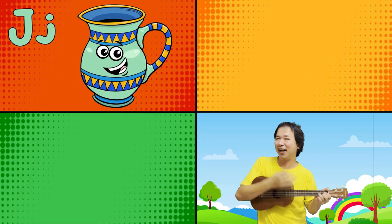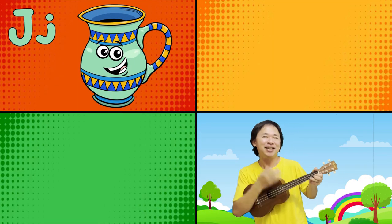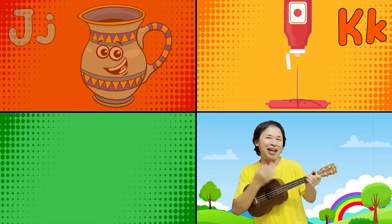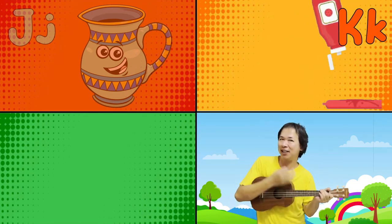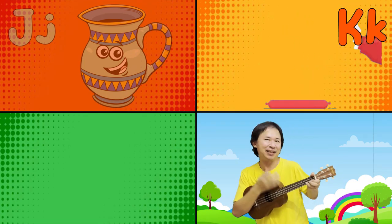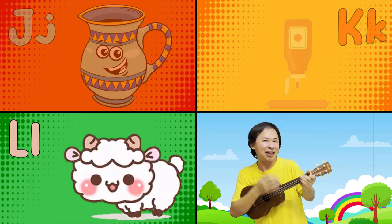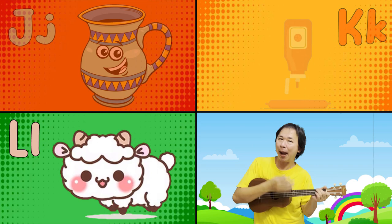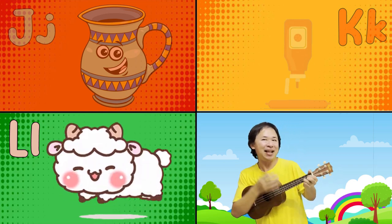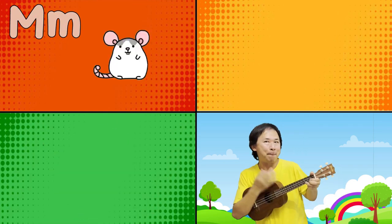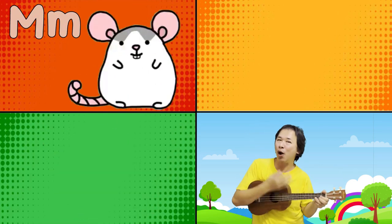J is for jug, j, j, j. K is for ketchup, k, k, k. L is for lamb, la, la, la.